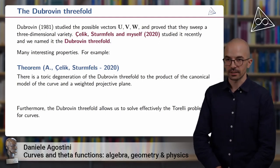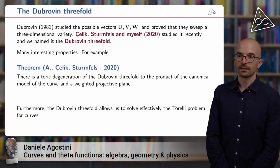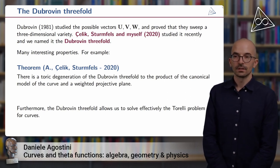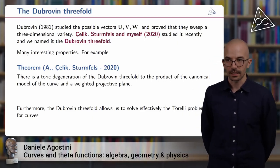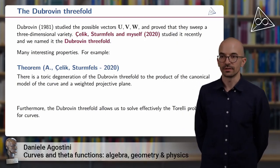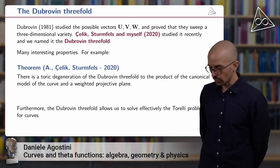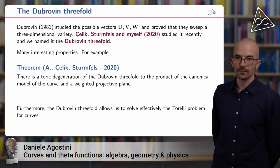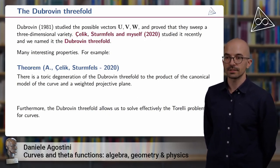In a joint project with Türkü Çelik and Bernd Sturmfels of the MPI that we did last year, we studied this variety from the point of view of algebraic geometry and we named it the Dubrovin threefold to honor the memory of Professor Dubrovin. In our paper, we offer different examples of computation of such a threefold and we study some of its interesting properties.